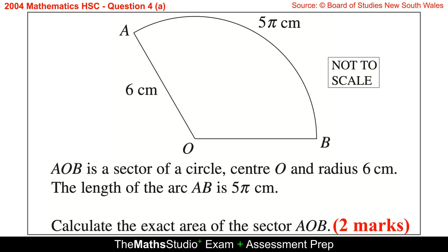Question 4, Part A. AOB is a sector of a circle, centre O and radius 6 centimetres. The length of the arc AB is 5 pi centimetres. Calculate the exact area of the sector AOB.